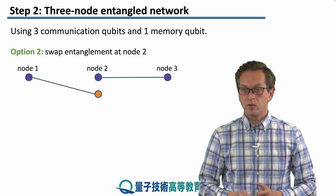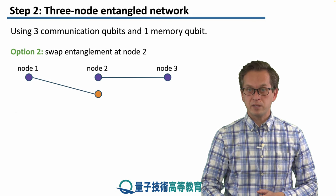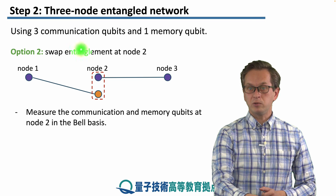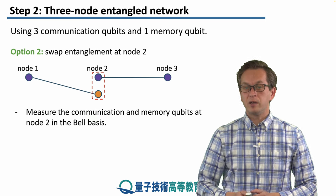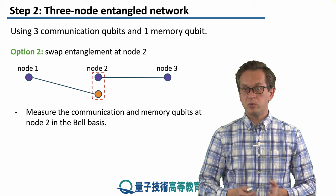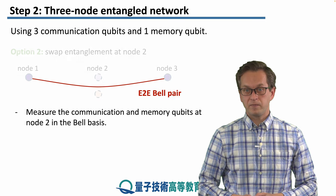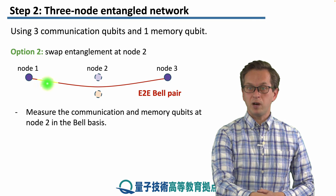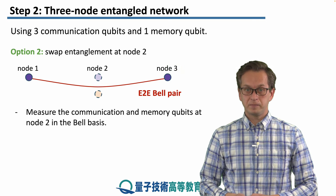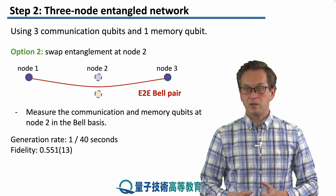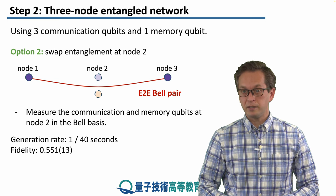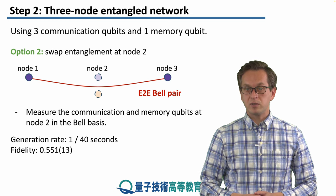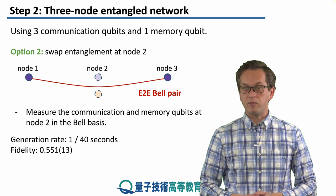Option number two was performing an entanglement swapping operation at node two. We perform a Bell basis measurement at node two on the communication qubit and the memory qubit. This establishes an end-to-end Bell pair between node one and node three. The generation rate was a little better — approximately one Bell pair every 40 seconds — and the fidelity was around 0.551.